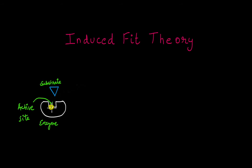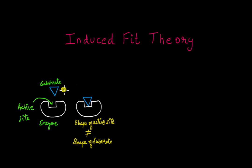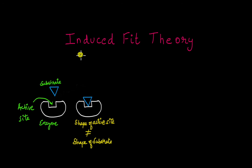If you notice carefully, you realize that the shape of the active site is not the same as the shape of the substrate. For an enzyme to work properly, the substrate needs to come and bind to the enzyme. Only if it binds properly can the reaction take place and the enzyme catalyze the conversion of substrate to product. If the substrate is not fitting in the active site properly, then how can this enzyme catalyze the substrate? This is where the induced fit theory actually makes sense.